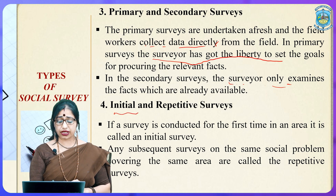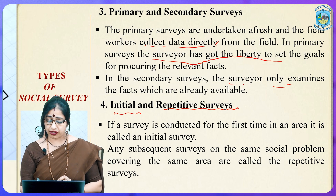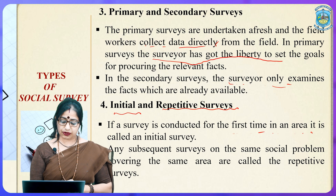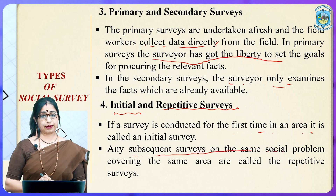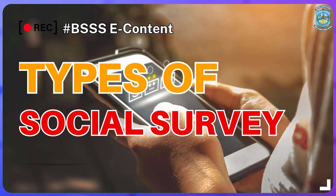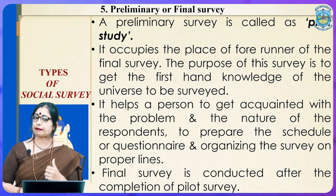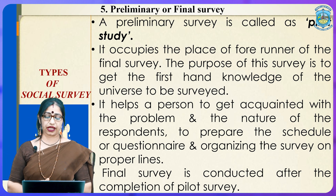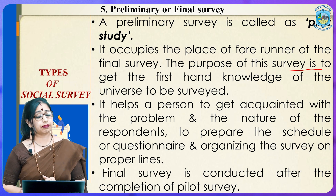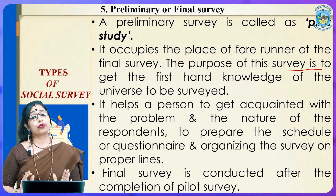Next are initial and repetitive surveys. An initial survey is conducted for the first time in an area pertaining to a problem or issue. Any subsequent survey on the same social problem covering the same area is called a repetitive survey. A preliminary survey, also known as a pilot study, occupies the place of forerunner of the final survey. Its purpose is to get first-hand knowledge of the universe to be surveyed.